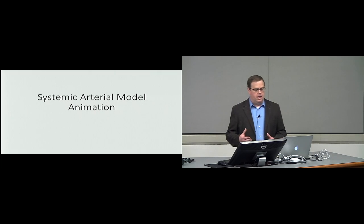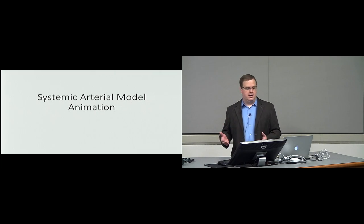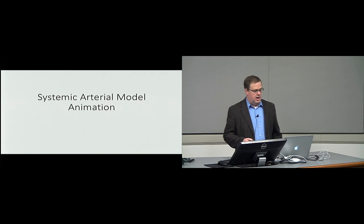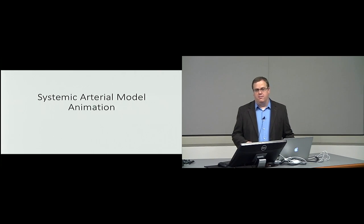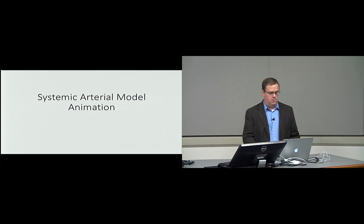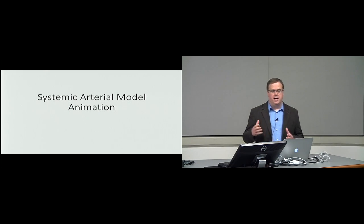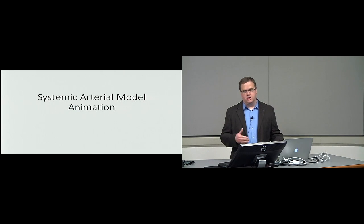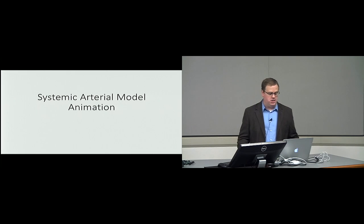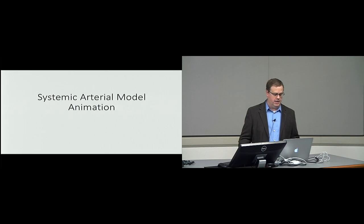I'm going to go through an example, and I think you'll get a good feel for how that's done in an ideal case. This is the systemic arterial model — what was in that Bern and Levy figure I just had up. We're going to go through an animation first to make sure everybody understands what the system we're simulating is and how it works, and then I'll show you how we model it. The animations actually take longer than understanding the quantitative modeling of the system.